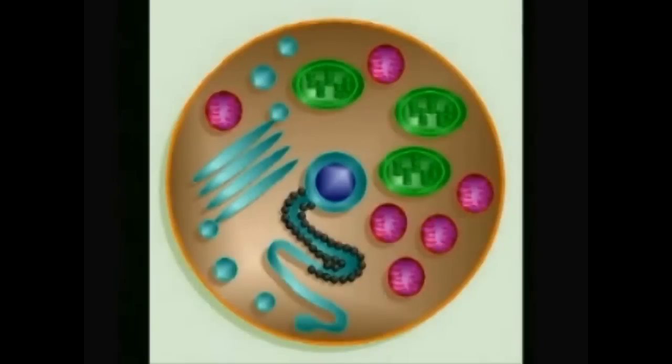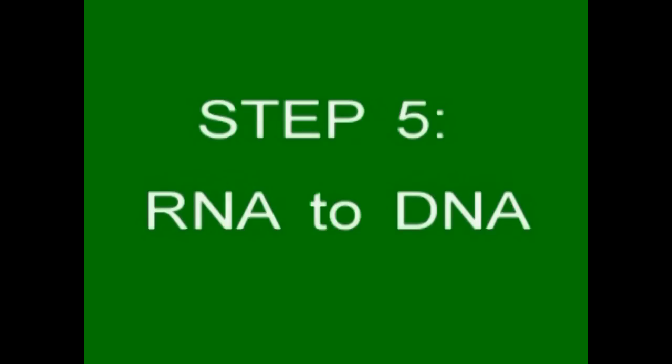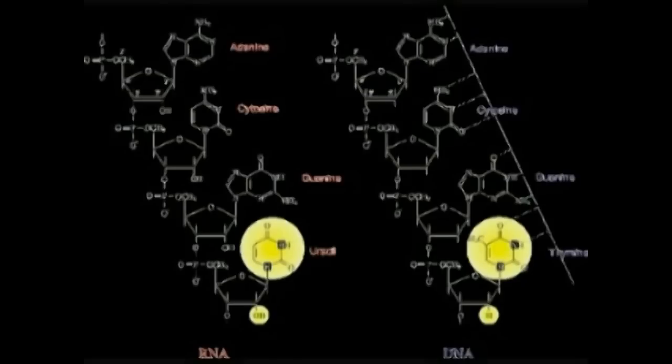Because they were better protected, they better survived and replicated more successfully. There you have the first primitive cells. They look nothing like the complex cells we have today for a very good reason: over 3.7 billion years they've evolved. Over hundreds of millions of years, RNA grew more complex — the single strand became a double strand and the better adapted DNA molecule evolved.